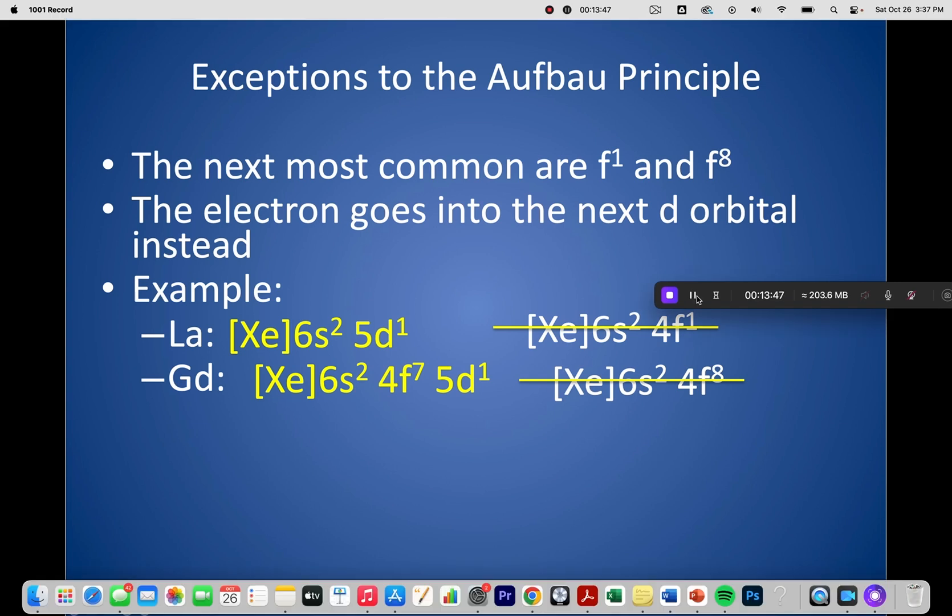So I hope you enjoyed this video. Some of the main takeaways is knowing the shapes of the S. S is spherical, knowing the shape of P. P is actually this dumbbell shape, and there are three different orientations for P because there are three different orbitals. And those orbitals are degenerate, meaning they have the same energy, but they just travel in different orientations.